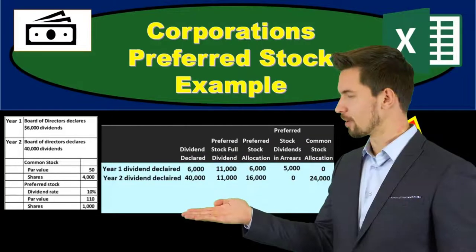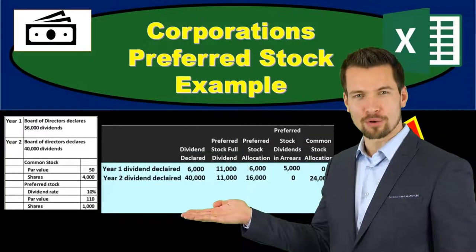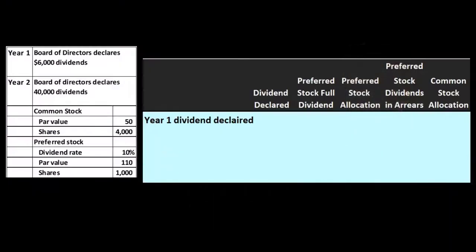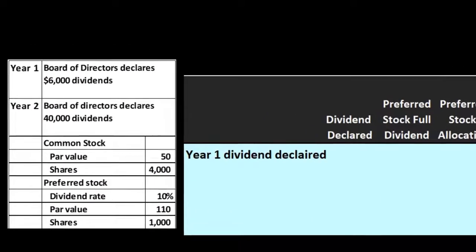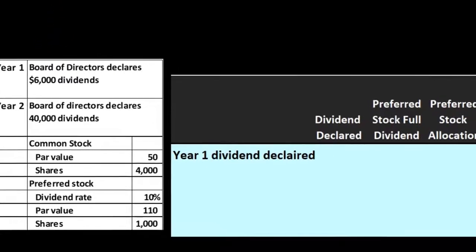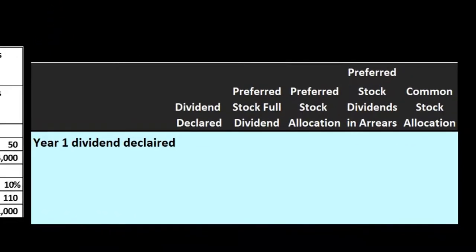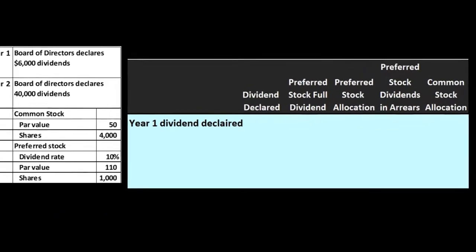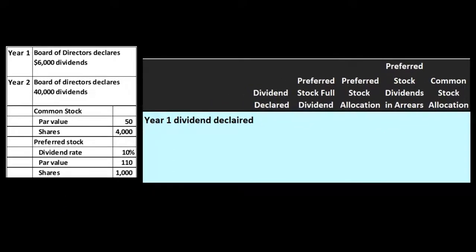In this presentation, we will give a preferred stock example. We're going to go through an example of distributing stock, and in this example we have preferred stock and common stock. This is going to be a common book problem type of example and a common problem in practice as well. The only real difficulty here is setting up a worksheet or a format in order to go through this process.